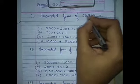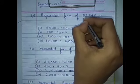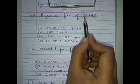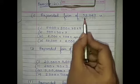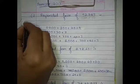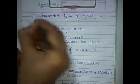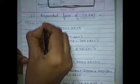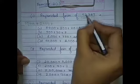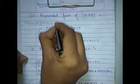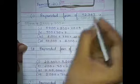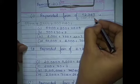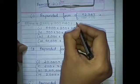First we have to label the places: ones, tens, hundred, thousand, and ten thousand. Now we write the expanded form of 52,743. Five is at the ten thousand place, so we write 50,000. Plus next, 2 is at the thousand place, so we write 2,000. Seven is at the hundred place, so the place value of seven is 700. Plus four at tens place, so the place value of four is 40. Three at ones place — three into one is three.